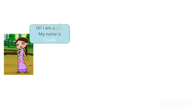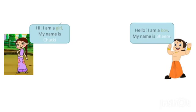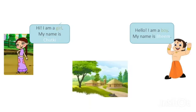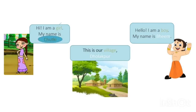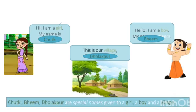Let's have a look at this slide. 'Hi, I am a girl. My name is Chutki.' 'Hello, I am a boy. My name is Bheem. And this is our village, Dholakpur.' Here, Chutki is the name of a girl, Bheem is the name of a boy, and Dholakpur is the name of a village. Chutki is a special name given to a girl, Bheem is a special name given to a boy, and Dholakpur is a special name given to the village.